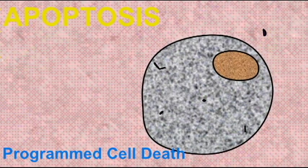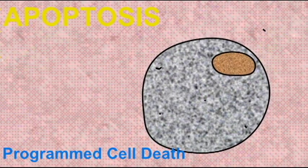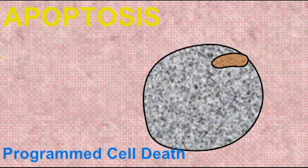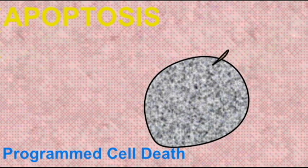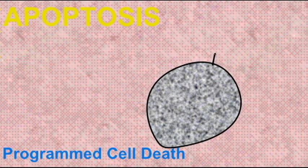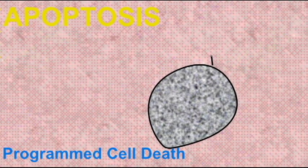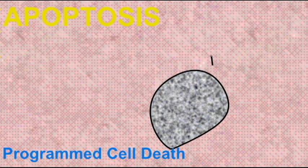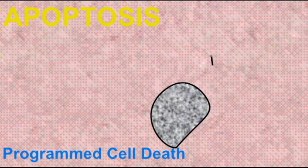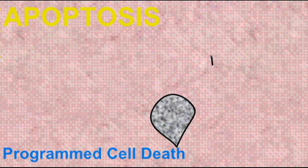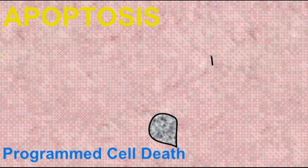This is one of the defense mechanisms that multicellular organisms have. If they begin to develop cells which should not be there — say, neurons which haven't hooked up correctly, embryonic structures no longer of use, or if cells should become cancerous — there's a whole cascade of proteins which can initiate this programmed cell death where cells are programmed to destroy themselves.